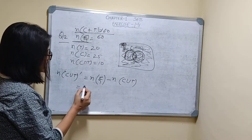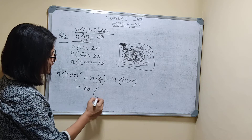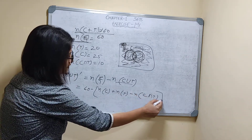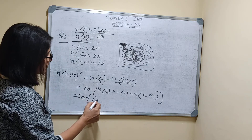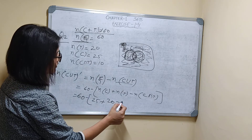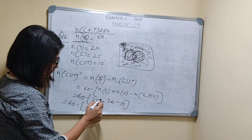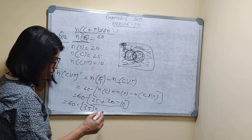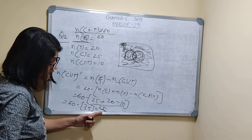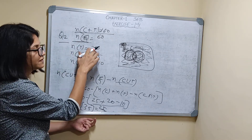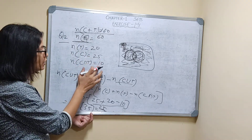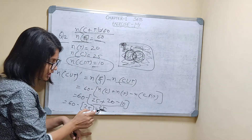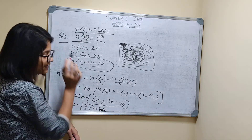N(C∪T)′ = 60 − [25 + 20 − 10] = 60 − 35 = 25. So 25 students play neither cricket nor tennis. Out of 60 students, 25 play cricket, 20 play tennis, 10 play both games, and 25 students play neither cricket nor tennis.